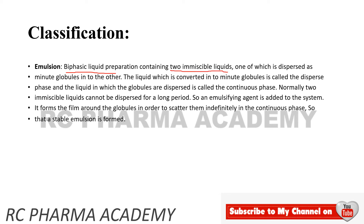Emulsions are also biphasic systems. They consist of two immiscible liquids. Milk is a common example of an emulsion. One phase is the dispersion phase in minute globular form; the other is the continuous phase. Emulsifying agents are added to stabilize the system.